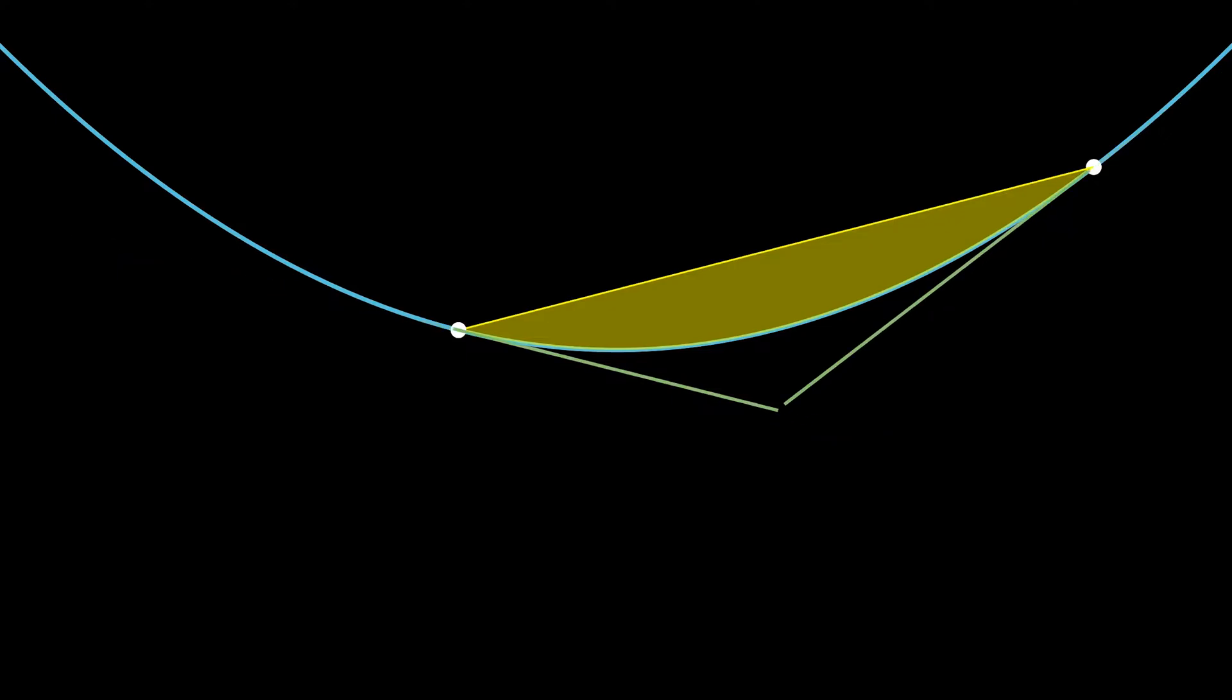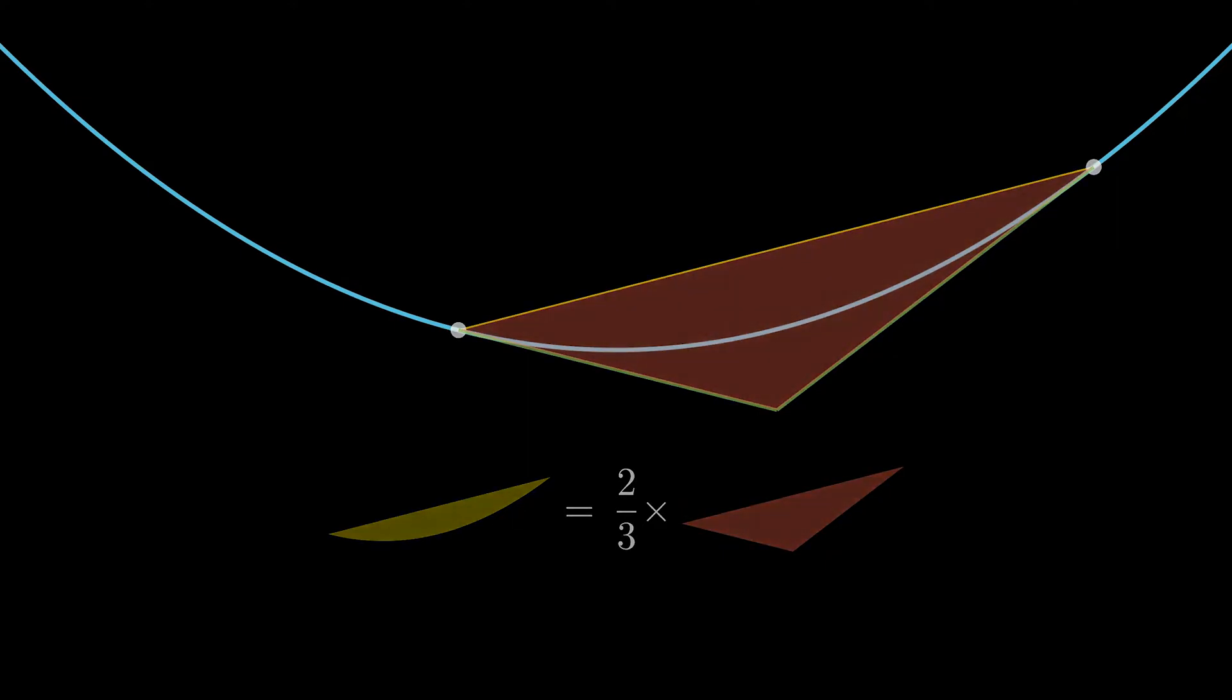Archimedes, the Greek mathematician, gave an elegant answer to this question without the knowledge of calculus. His answer was that the area of the segment is equal to two-thirds of the area of the triangle found by the two tangents intersecting at a point.